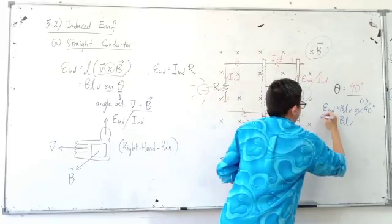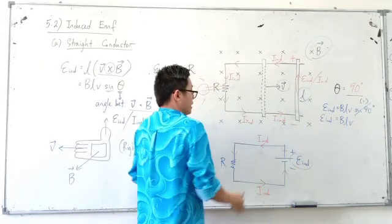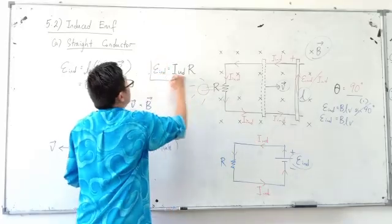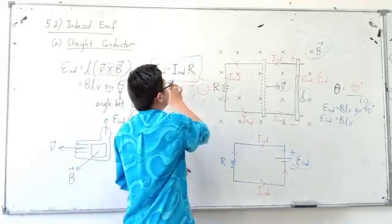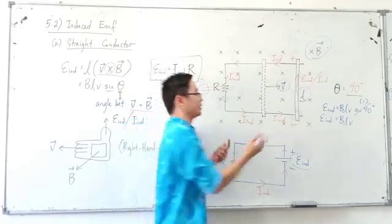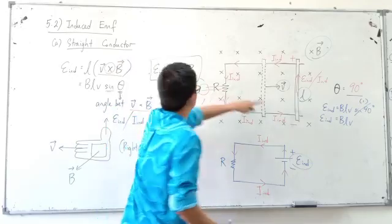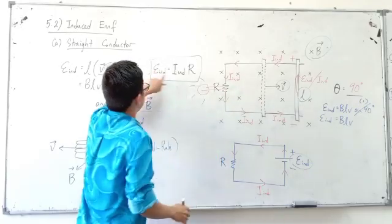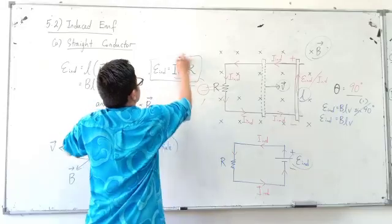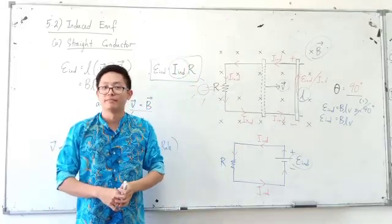Once you have the induced EMF, to find the induced current, use the formula E equals IR — just like Ohm's law, V equals IR. Put in the induced EMF value and the resistance value, and you can calculate the induced current.